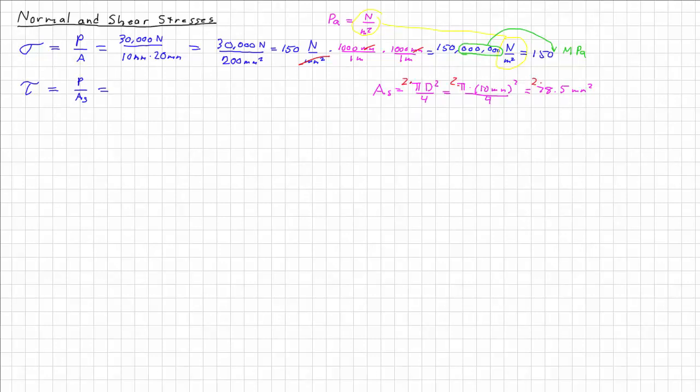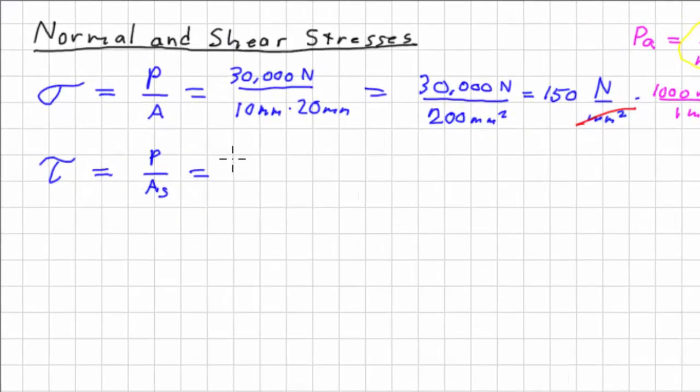So we've got our force, which is 30,000 newtons, and our area in shear is 2 times 78.5 square millimeters, and that yields 191 megapascals.